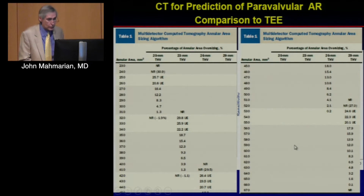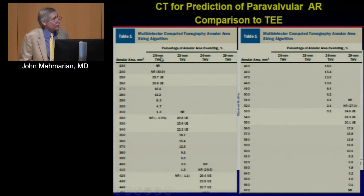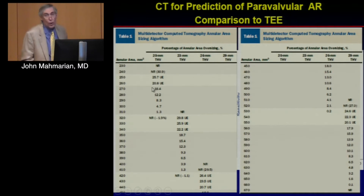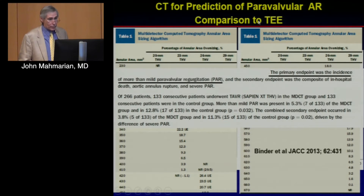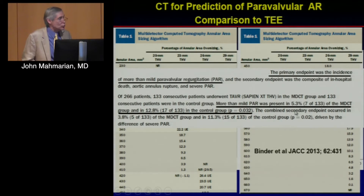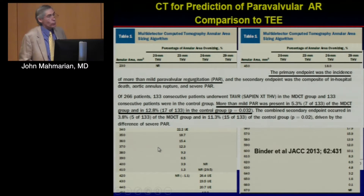A recent prospective trial by Binder used an algorithm that specified the required annular area for each valve size — the 20, 23, 26, and 29 mm valves. Patients were randomized to this CT-based algorithm versus physician choice using TEE or CT as they wished. The primary endpoint was more than mild paravalvular regurgitation: only 5.3% with the CT algorithm versus 12.8% in the control group, demonstrating that CT-based specific algorithms can substantially reduce paravalvular regurgitation.